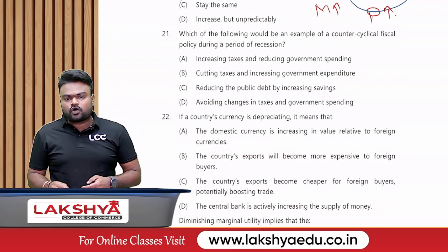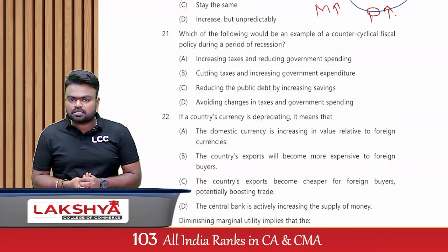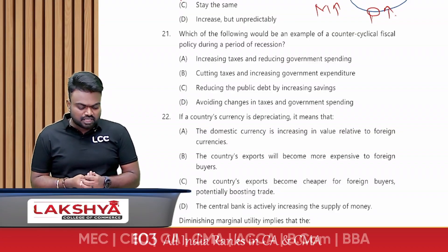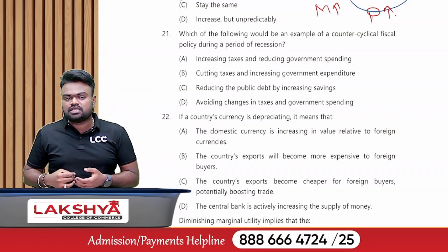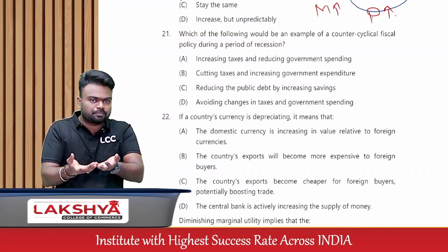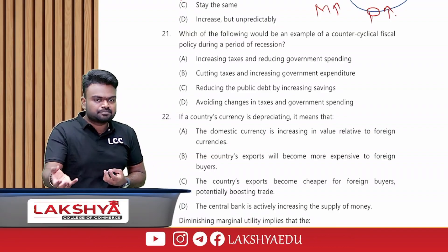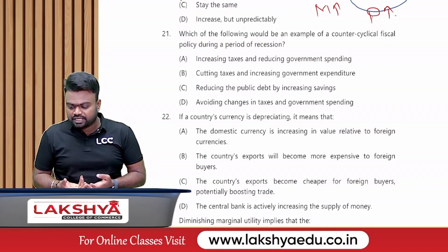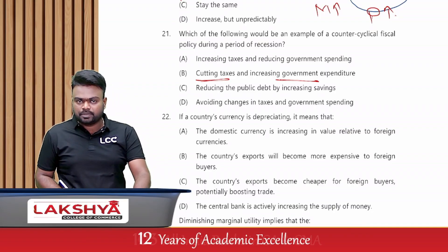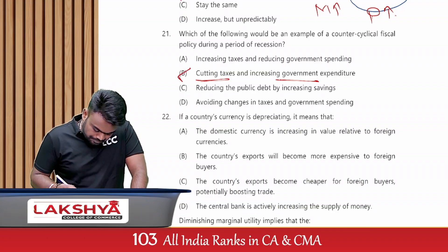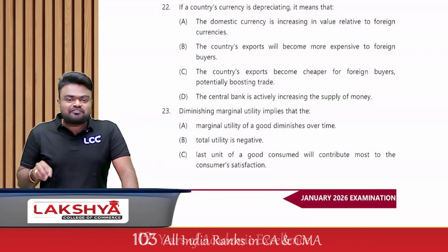Which would be an example of counter-cyclical fiscal policy during a period of recession? In a recession, we need to take expansionary policy — to increase spending. Spending increases when we reduce tax and increase government expenditure. The answer is option B.